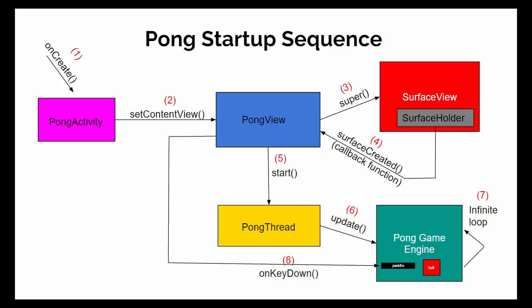Now let's talk about the sequence in which objects are created when the app first initializes. First, the OnCreate method happens in the PongActivity. The PongActivity then calls SetContentView to change the view to the PongView. The PongView inherits from SurfaceView, and SurfaceView contains an object called SurfaceHolder. When PongView calls the constructor for SurfaceView, it automatically creates a SurfaceHolder object, which then creates a Surface. When that Surface is finished being created — which is an asynchronous task — a callback function is placed back to the PongView. Only once the PongView has received this callback does it know it's safe to start the PongThread, shown in event number 5 here.